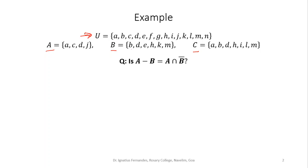Suppose I want to prove or check whether A minus B is equal to A intersection B complement. This is something we have already proved in general, so obviously it will be true. But given specific sets like this, what we have to do is find out A minus B and then A intersection B complement, and see whether both sets match.